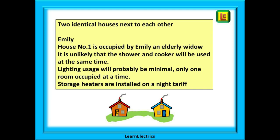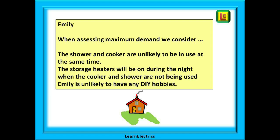Consider this: we have two identical houses next to each other. House number one is occupied by Emily, an elderly widow living alone. When assessing maximum demand for Emily's house, we should consider that the shower and cooker are unlikely to be in use at the same time. The storage heaters will be on during the night when the cooker and shower are not being used. Emily is unlikely to have DIY hobbies that might involve heavy electrical equipment.